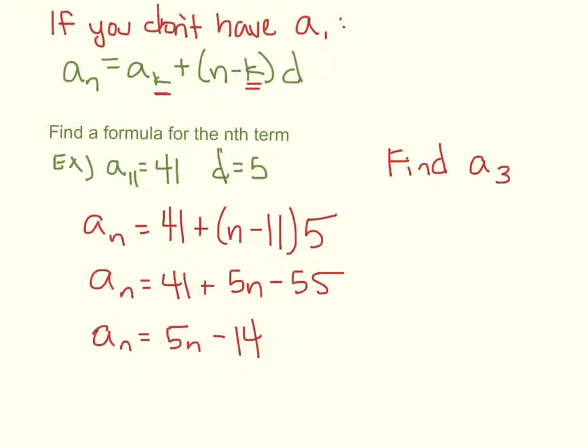So now I'm going to replace that n with any number, right? So I'm finding a₃. a₃ equals 5 times 3 minus 14. So the third term in the sequence would be 1.